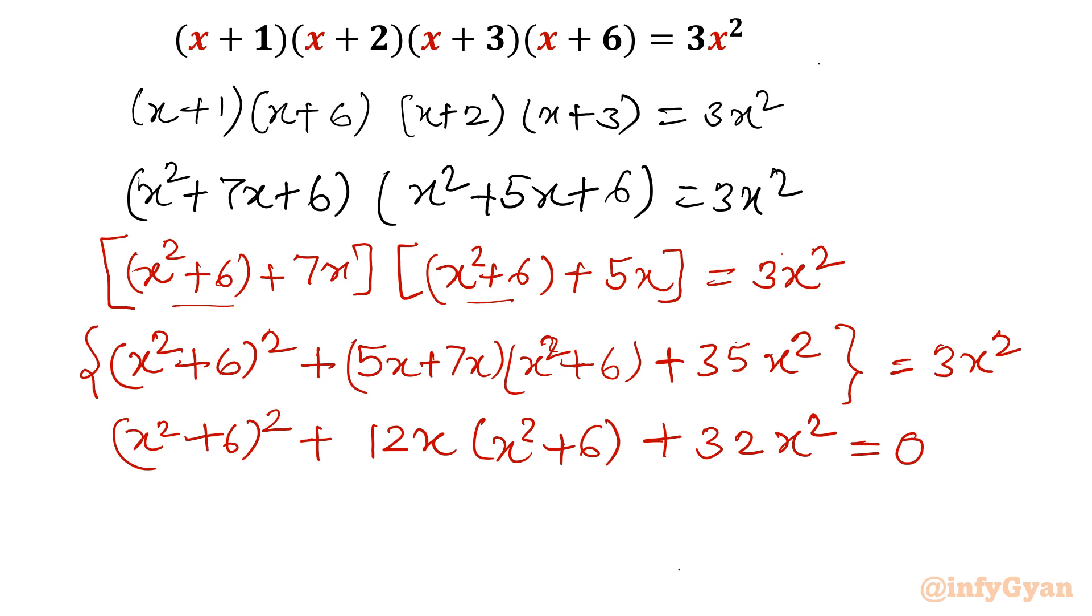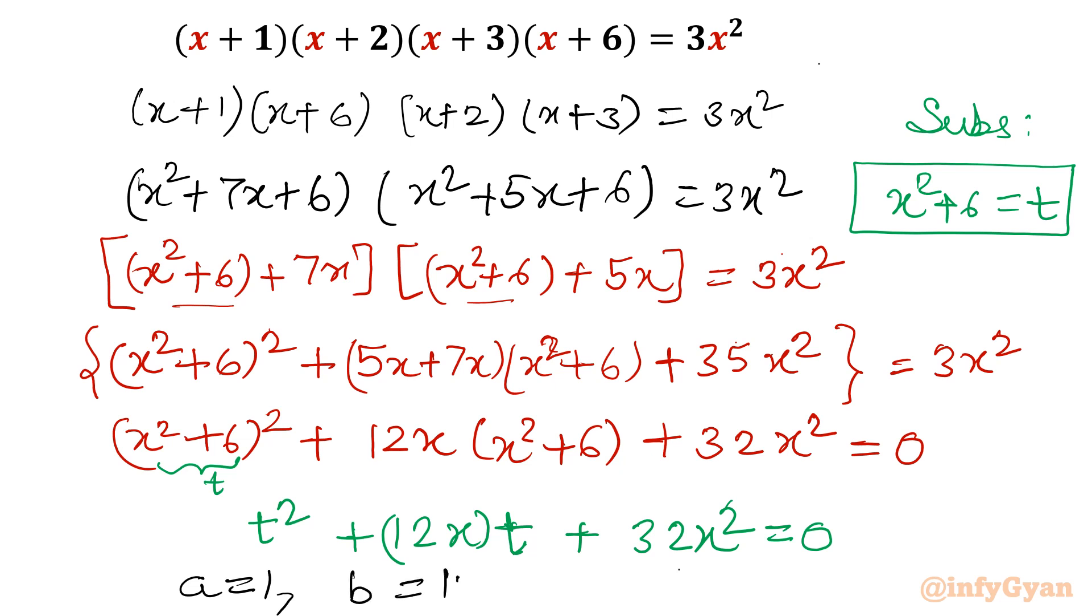Now it is very clear. If I will substitute, if I will put x²+6 is equal to t, then equation will be t² plus 12x consider as a constant times t plus 32x² equal to 0. So our substitution is x²+6 is equal to t. This is one quadratic equation in variable t. So I am going to apply the quadratic formula. a is equal to 1, b is equal to 12x, c is equal to 32x².